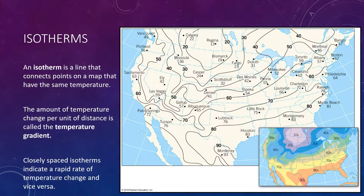Without isotherms, a map would be covered with numbers representing temperatures at dozens or hundreds of places, which would make the pattern difficult to see. In the inset on the bottom right, you can see color added to make this figure really pop.